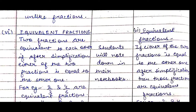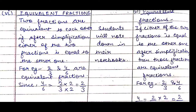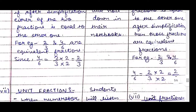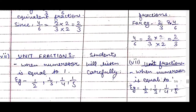Next come equivalent fractions. Two fractions are equivalent to each other if, after simplification, either of the two fractions is equal to the other. For example, 2/3 and 4/6 are equivalent fractions — if 2/3 is multiplied by 2 in both numerator and denominator, we get 4/6. We write on the board: equivalent fractions — if either of the two fractions equals the other after simplification. Example: 2/3 and 4/6.